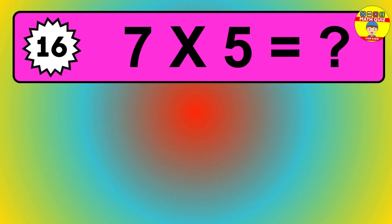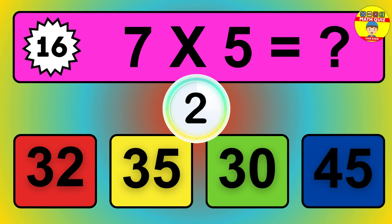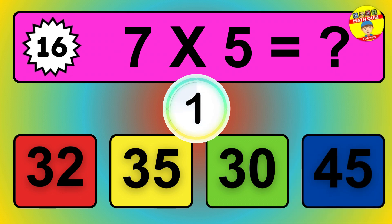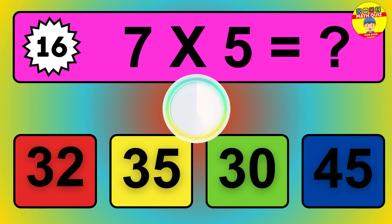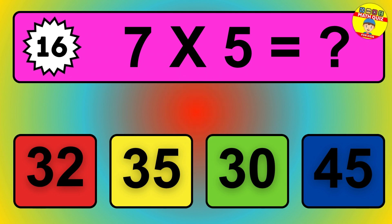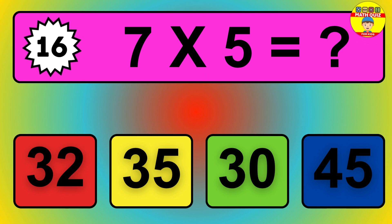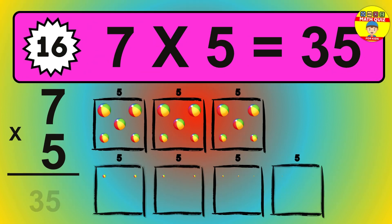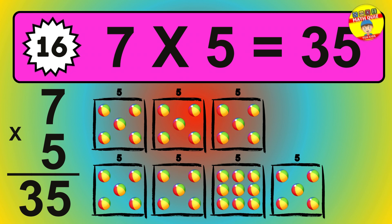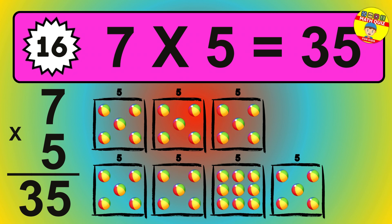Question 18. 4 times 9 equals what? The answer is 4 times 9 is 36. To calculate, we have 4 groups with 9 balls each one. So, how many balls do we have? 36 balls.